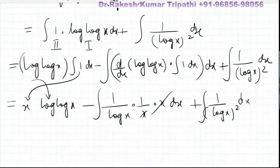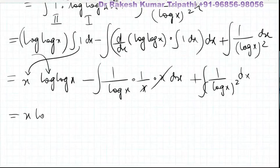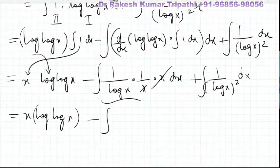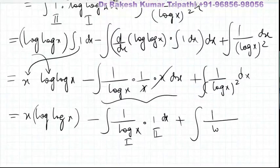It can be seen that this minus 1 by log x and 1 by (log x) squared cannot be cancelled. So again we shall apply integration by parts in this 1 by log x dx, considering 1 by log x as the first function and 1 as the second function, plus 1 upon (log x) squared dx.